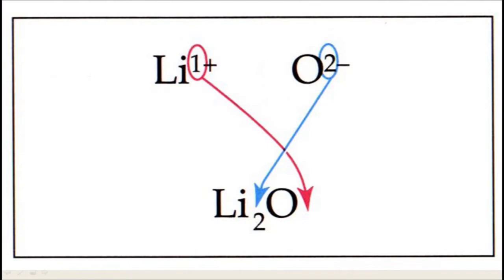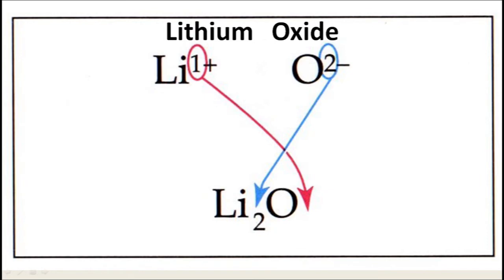The next compound is lithium oxide. The symbol for lithium is Li and for oxide is O. The charge on lithium is +1 and on oxide is -2. Here we exchange the charges by the crisscross method and we write Li₂O, which represents lithium oxide.